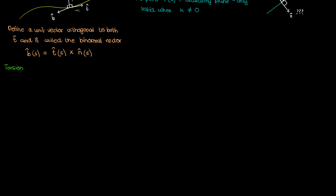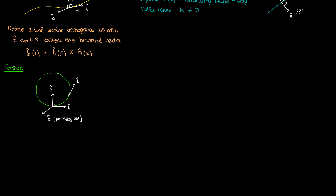Let's now talk about torsion by first describing the intuition. We start with a unit speed curve gamma of s on a plane — a curve that initially looks like a circle. At a given point, the unit tangent vector and unit normal vector are defined, and the binormal vector points up outside the blackboard. As I go along this curve on the plane, the tangent vector changes and the normal vector changes, but because we remain on the same plane the binormal vector doesn't change. So if a curve remains in a single plane, its binormal vector will not change.